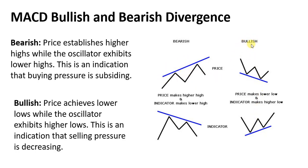The same thing applies to bullish divergence. Here the price is making lower lows — actually dropping lower and lower. However, the indicator is making higher lows — it's dropping, but not to a lower level. So this disagreement between price and the oscillator is a divergence, and this time it's a bullish divergence.